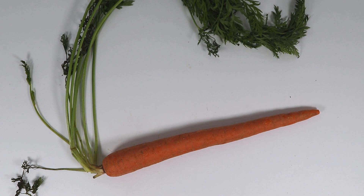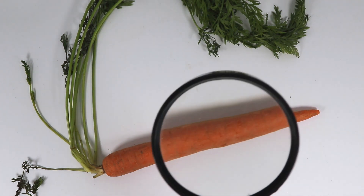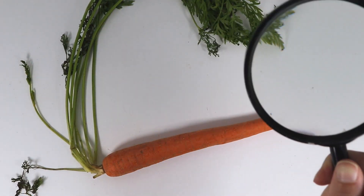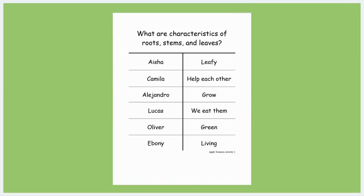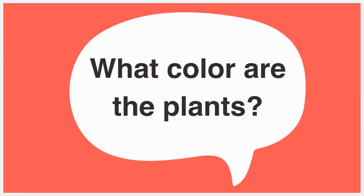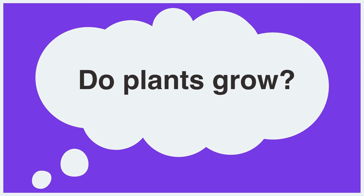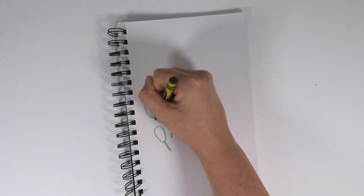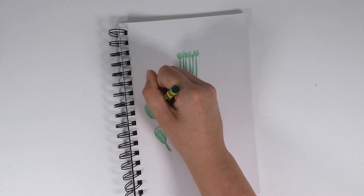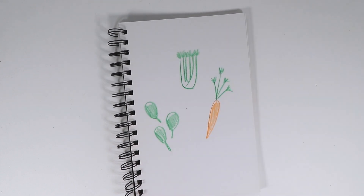Start by showing and describing to children a whole carrot and asking questions to see if they know about roots, stems, and leaves. Then create your documentation panel as you have children compare and contrast the variety vegetable cards. Ask children fair questions that can be answered through observations, such as: What color are the plants? Build on prior learning by asking children questions about whether the vegetable plants are living or non-living, such as: Do plants grow? Children should then be provided with their science journals and encouraged to draw the types of roots, stems, and leaves observed during class.